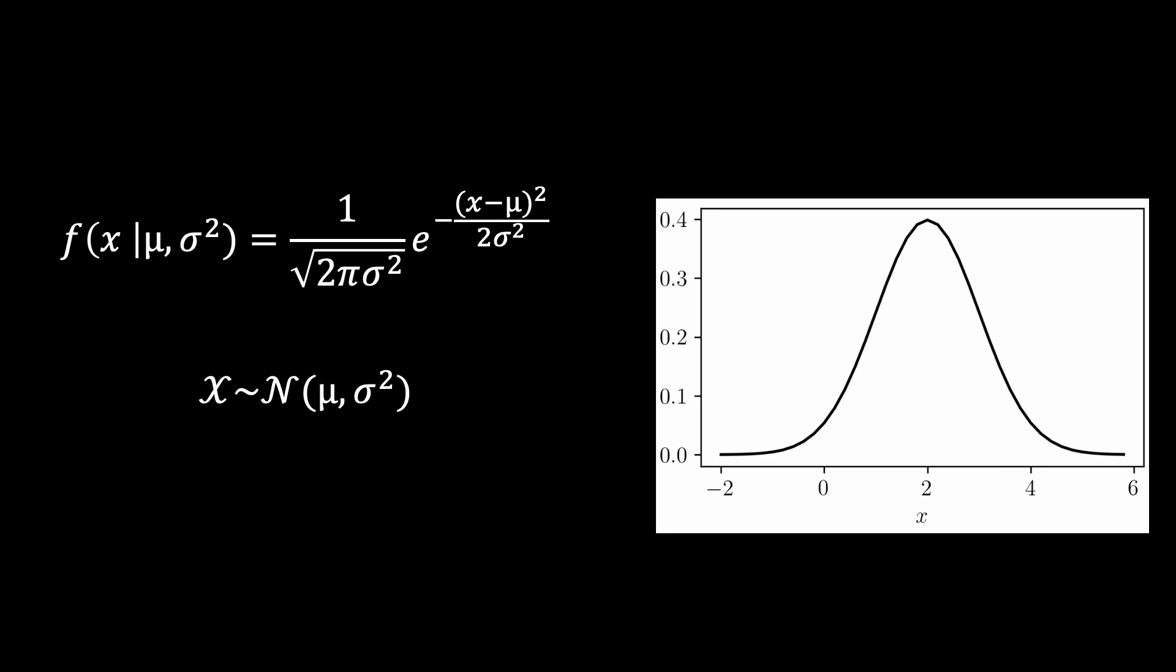For differential privacy, the mean is also, like we have seen in the Laplace distribution, set to zero.